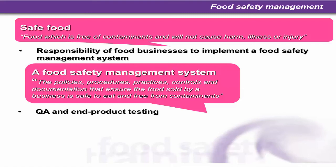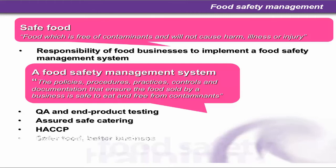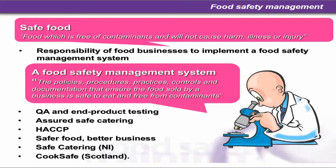There are other types of food safety management systems: QA (quality assurance), product testing, assured safe catering which really died out in the late 80s, HACCP which is what we'll be looking at in this course, and Safe Food Better Business, along with Safe Catering and CookSafe — individual HACCP systems developed for smaller businesses. CookSafe is Scotland, Safe Catering is Northern Ireland, and Safe Food Better Business is used in England and Wales. The British government decided to be flexible with small businesses, allowing them to use these smaller systems, which are equally robust but involve less paperwork depending on the size and complexity of the business. These systems can be downloaded free of charge from the Food Standards Agency's website.